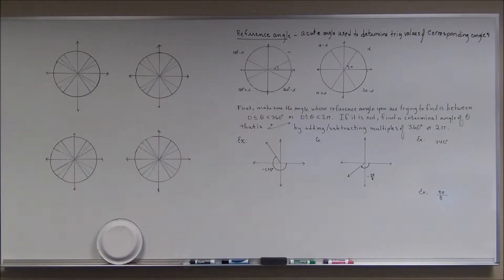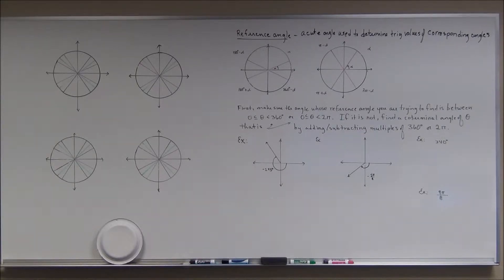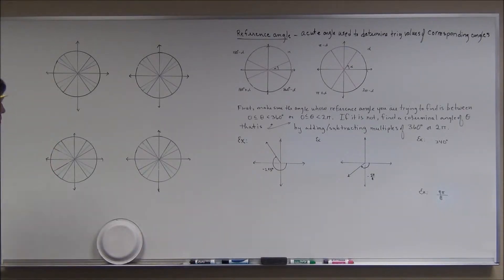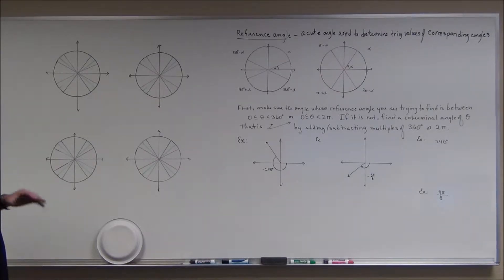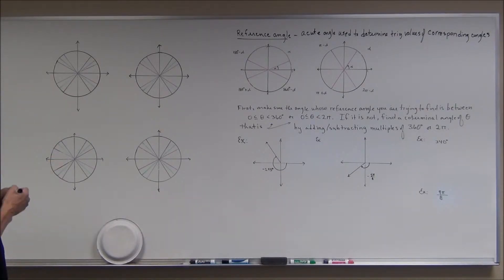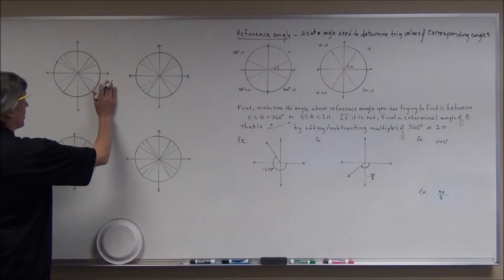I have some diagrams up here. Notice the way I try to draw them so they all look the same, with different colors so you can see the reference angles for each quadrant. What I'm keying on here is that you're able to do degrees, radians, sines, and cosines — because if you know those, you'll be able to do tangents, secants, cosecants, cotangents, and all the rest.